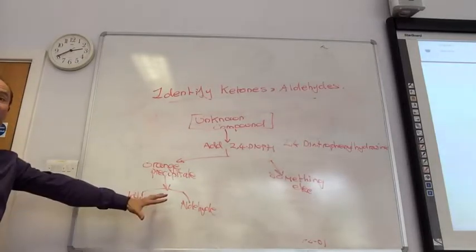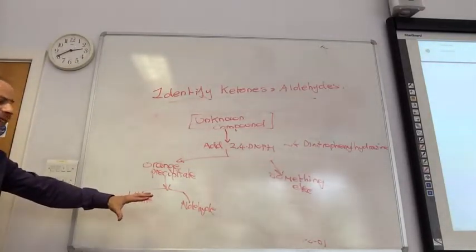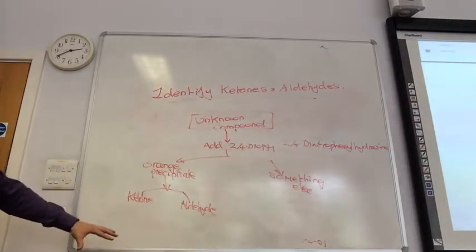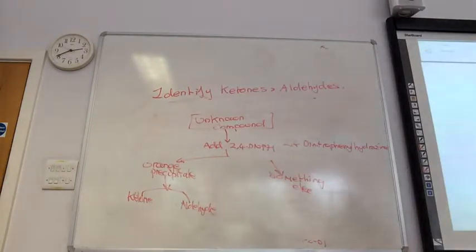You know you've got either an aldehyde or a ketone. How can you tell the difference between those two? Well, you add something called Tollens Reagent. Tollens Reagent is silver nitrate solution, which has been dissolved up in ammonia.